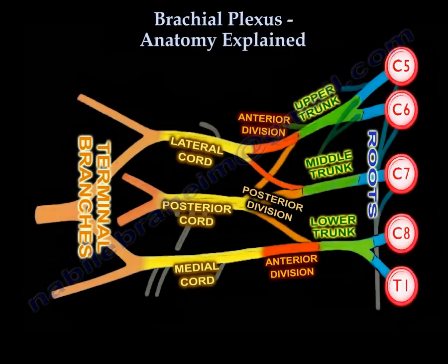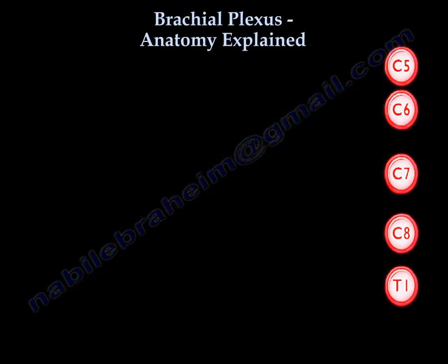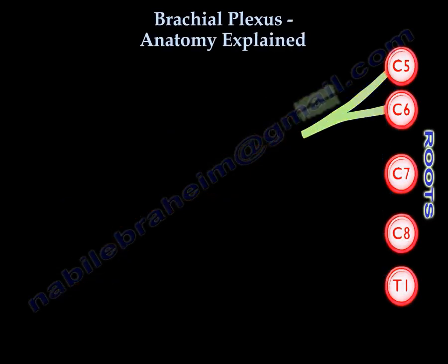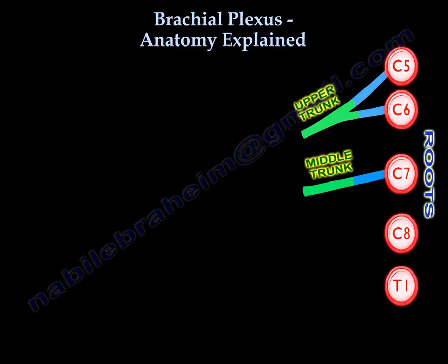Now let's draw the plexus together. You have five roots: C5 and C6 — the top two roots — unite to make the upper trunk. The C7 nerve root stays alone and becomes the middle trunk, like the middle child who likes to be independent. C8 and T1 are the remaining two roots.